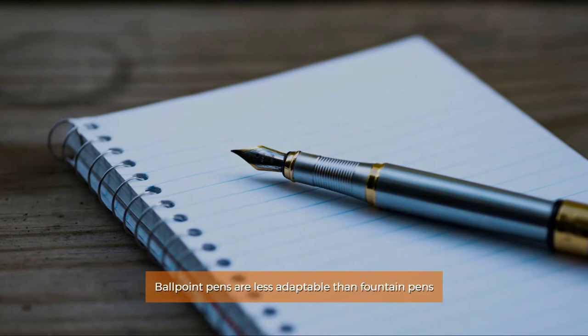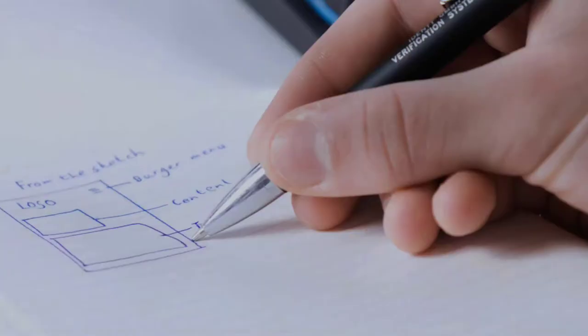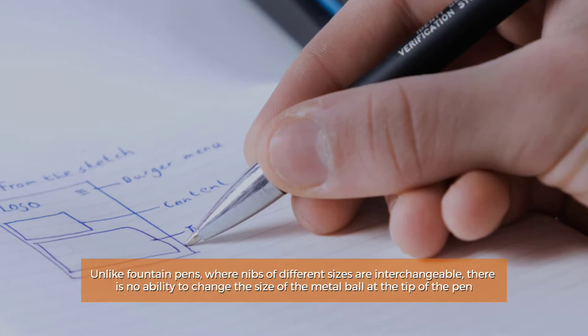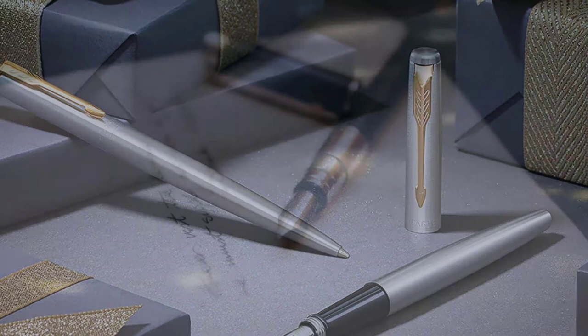Ballpoint pens are less adaptable than fountain pens. They produce uniform strokes on the page with no variance in the marks. Unlike fountain pens, where nibs of different sizes are interchangeable, there is no ability to change the size of the metal ball at the tip of the pen. Instead, you'll have to purchase a variety of ballpoint pens of varying sizes.